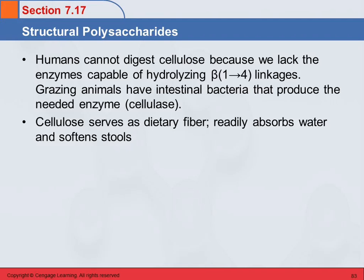Grazing animals like horses, cows, goats, and sheep eat grass and derive nutrition from it, and yet they also lack the enzyme to digest cellulose. What they do have is bacteria in their intestines that produce the enzyme — it's a very symbiotic relationship. The bacteria produce the enzyme that allows the cow to digest the grass, and the bacteria benefit by having a place to live. Cellulose is still important in our diet as dietary fiber — it readily absorbs water and softens stools, so getting enough fiber is important.